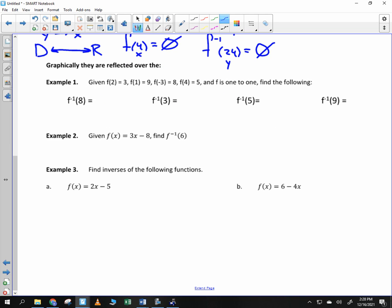Now, example one. It says F of two is three. So that means the X value is two and the Y value is three. F(1) = 9, F(-3) = 8, F(4) = 5. And it's a one-to-one function. Find the following.